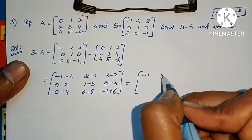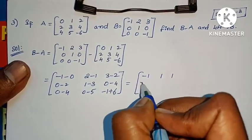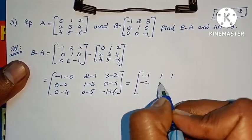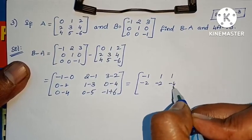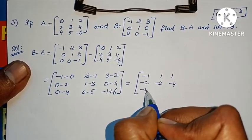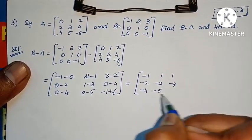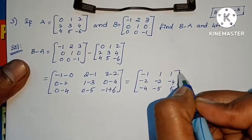B minus A result: minus 1, minus 1, 2, 1, 3, 2, 1, minus 2, 3, 1, 2, 0, 3, 2, 0, minus 1. Minus minus 2 gives positive; 0 minus 3, 0 minus 0 minus 1, minus 0.